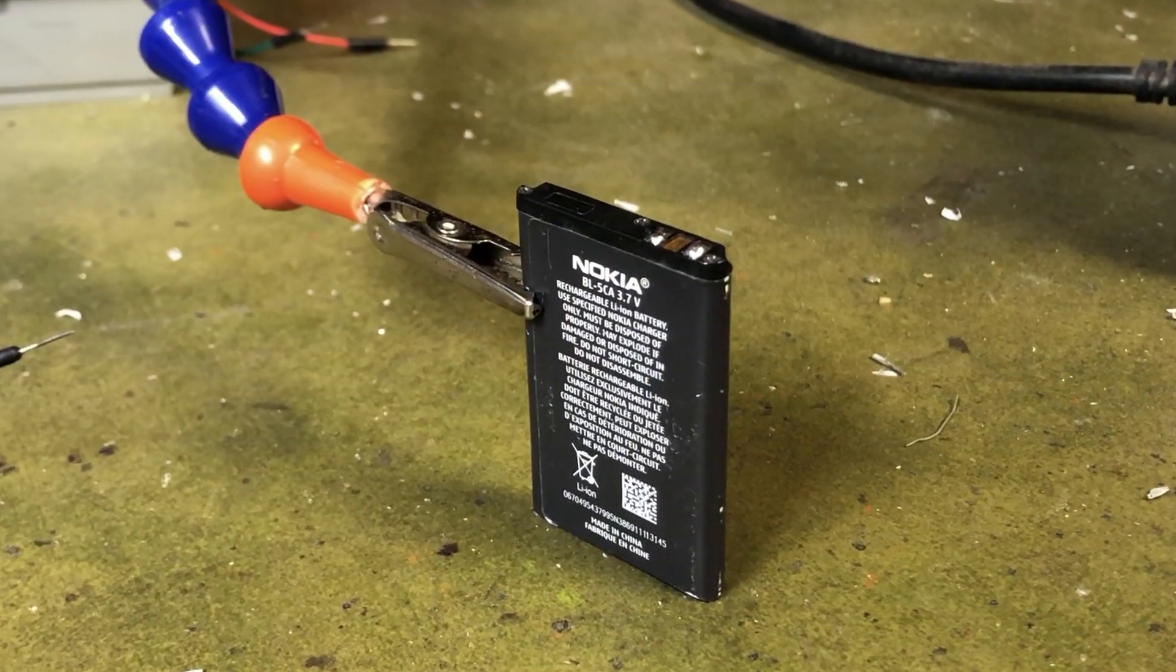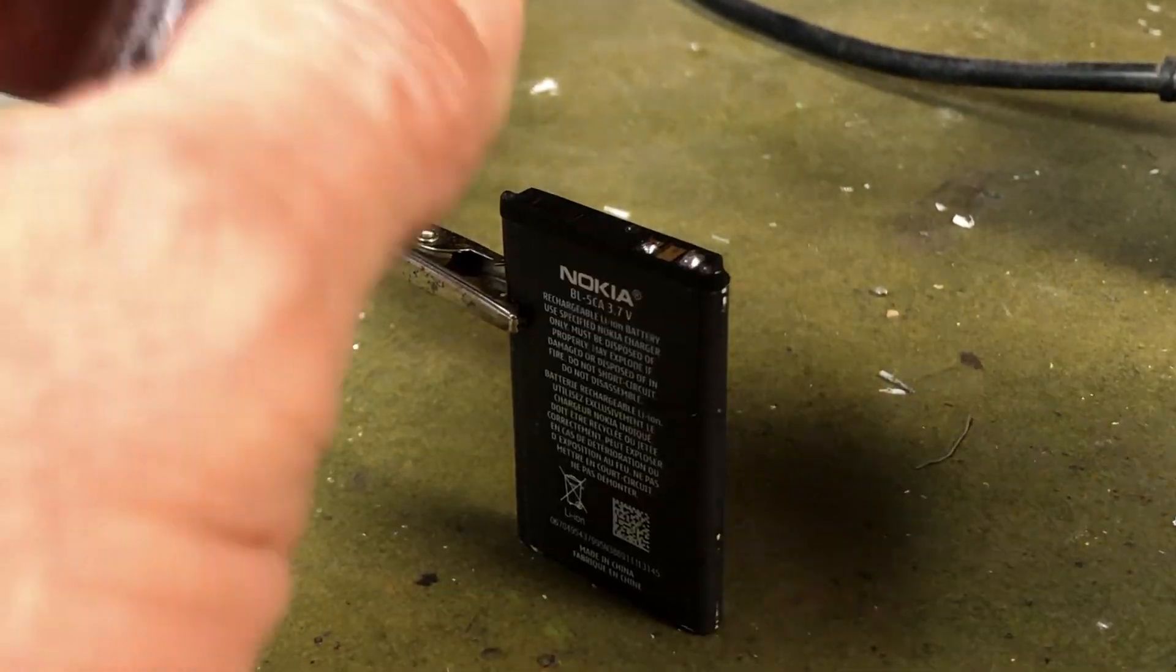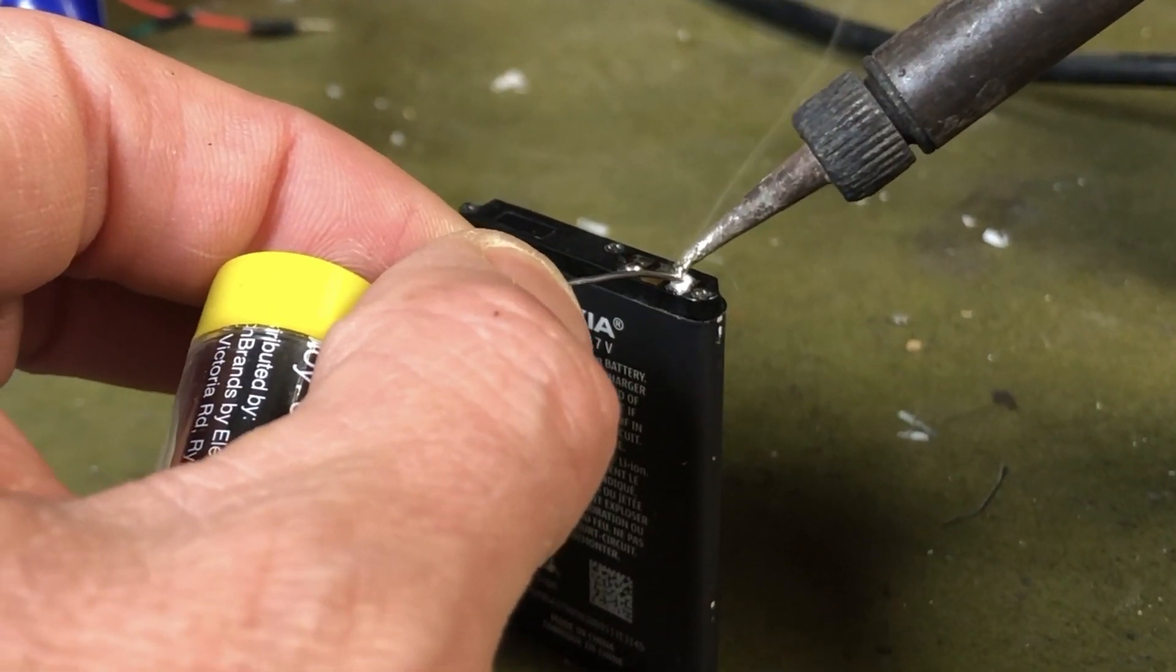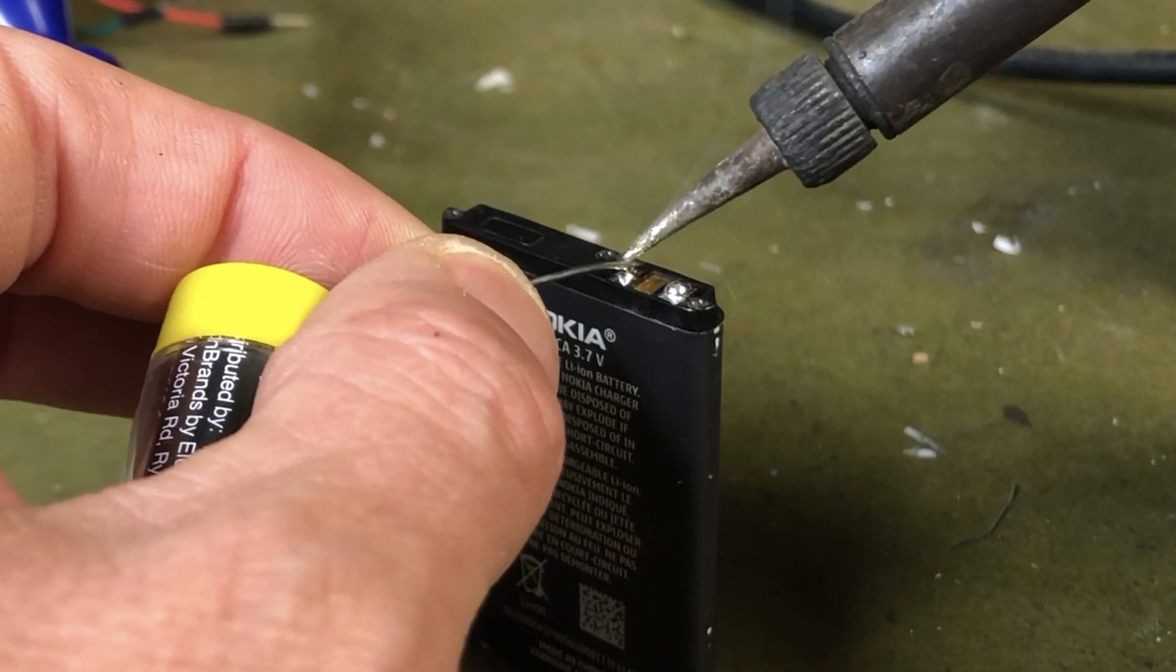So the first thing you need to do is to add a little bit of solder to the positive and negative terminals. You have to be careful when doing this because these lipo batteries don't like to be heated up, so try and add the solder as quickly as possible.